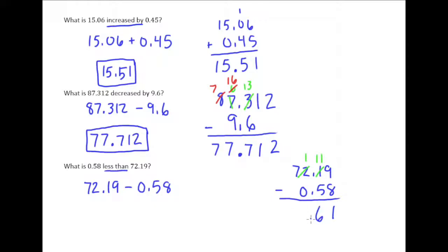Drop down the decimal point, and then 1 minus 0 is 1, and 7 minus 0 is 7. So our answer here is 71.61, or 71 and 61 hundredths.